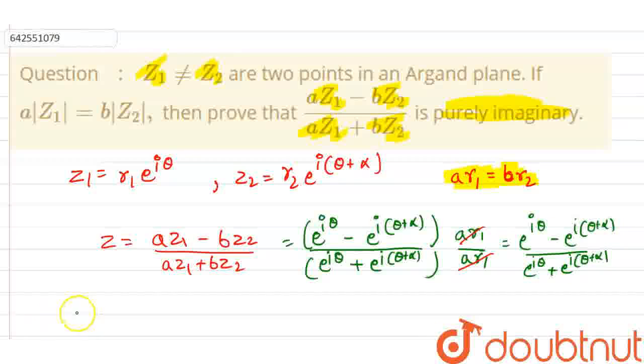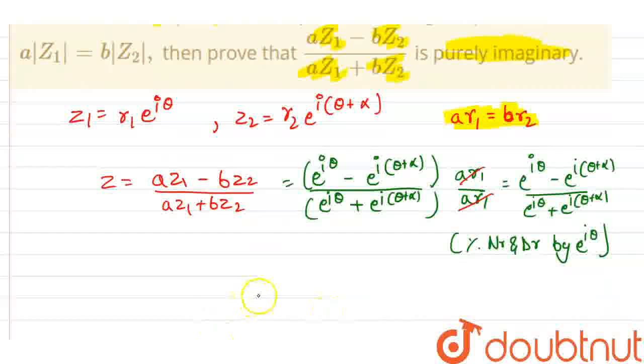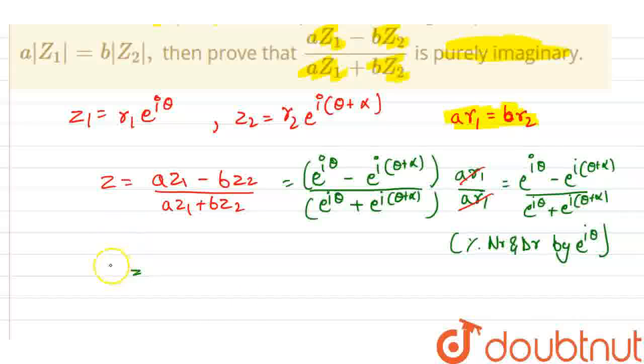So now we have to divide numerator and denominator by e to the power iota theta. Then only we can be able to solve this question. So now, which means z is equal to 1 minus e of iota alpha because theta got cancelled. Similarly, 1 plus e to the power iota alpha.